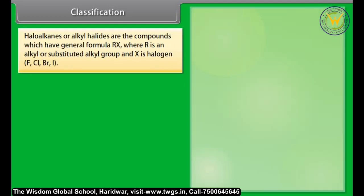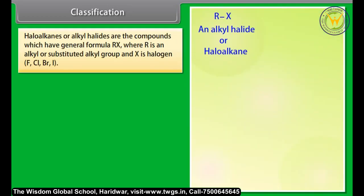Haloalkanes, or alkyl halides, are compounds which have the general formula RX, where R is an alkyl or substituted alkyl group and X is the halogen — F, Cl, Br, or I.